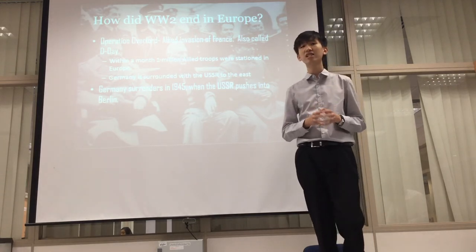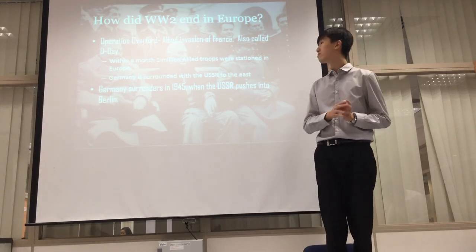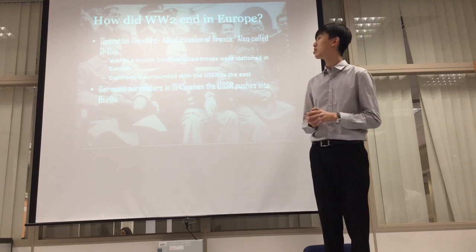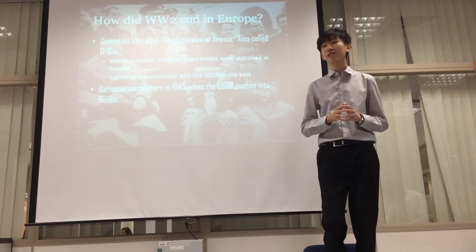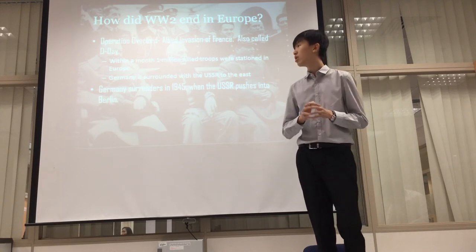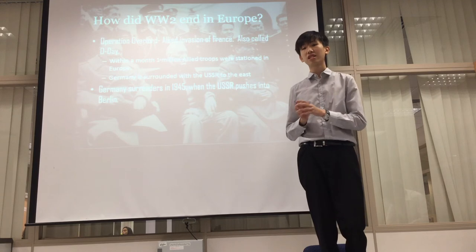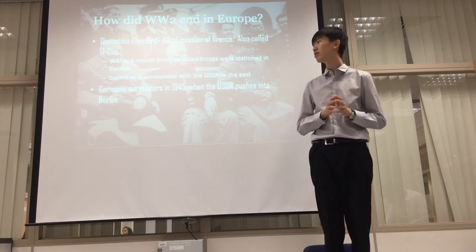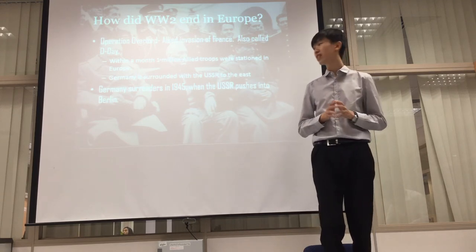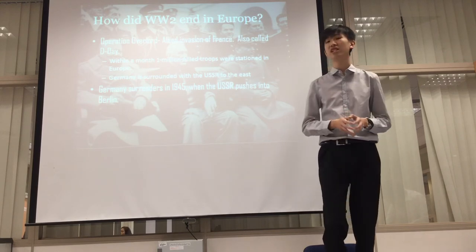And so, how did World War II end in Europe? Operation Overlord was the Allied invasion of France. Within a month, one million Allied troops were stationed in Europe. Germany was surrounded with the USSR in the East, and hence Germany was fighting on both fronts. Germany surrendered in 1945 when the USSR pushed into Berlin.